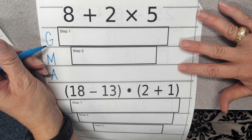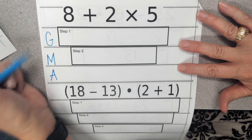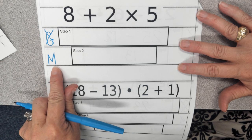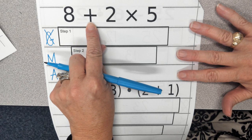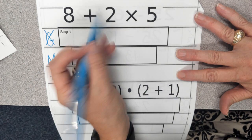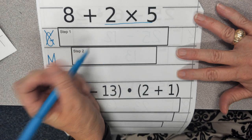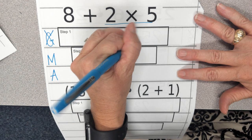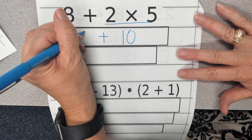All right, when I look at this problem and I think about my grouping symbols, I don't have any, so I'm going to go ahead and cross that piece off. The next thing would be my multiplicative actions, so when I survey my problem, I see that I have adding and multiplying, so I'm going to underline that piece first. So the part that I will solve will be 2 times 5, which is 10, and I'm going to drop my addition sign and my adding sign.